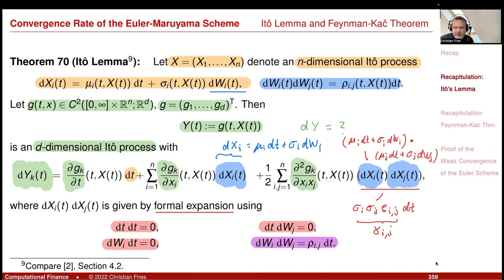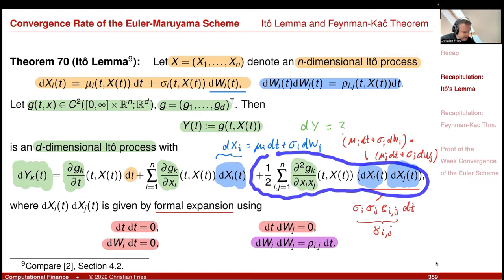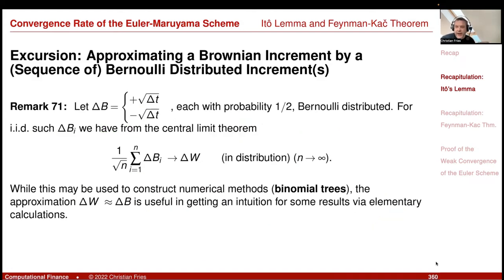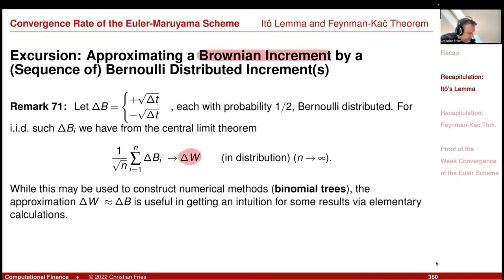Why do we have the second-order term — why is it not just a chain rule? An easy way to get intuition is to look at a numerical implementation, for example, approximating the Brownian increment dW by a Bernoulli-distributed increment.